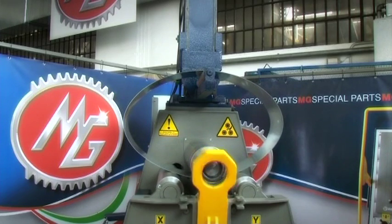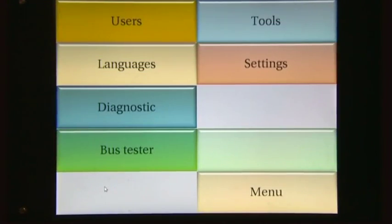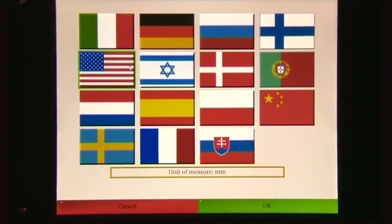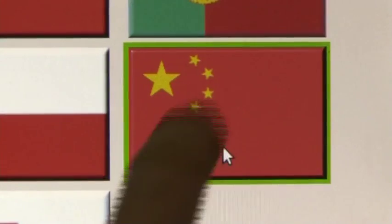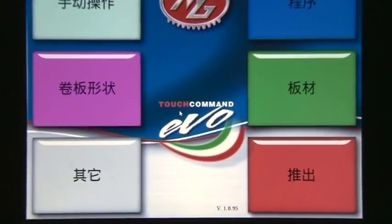Our software is available in all the main languages. To select a language from the main menu, let's open the secondary one and then press the languages button. Let's choose the language of our interest. On request, other translations can be added.